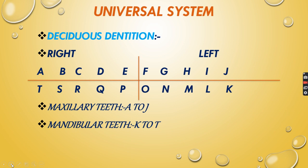For the deciduous dentition, the alphabet runs from A to T, moving clockwise around the dentition. This is the right quadrant and this is the left quadrant. The maxillary arch uses A, B, C, D, E for the right quadrant and F, G, H, I, J for the left maxillary arch. The mandibular arch uses Z, O, N, M, L, K for the mandibular left arch.